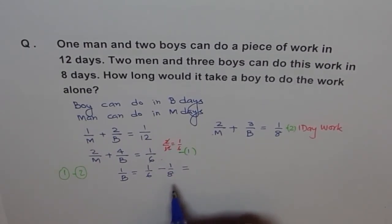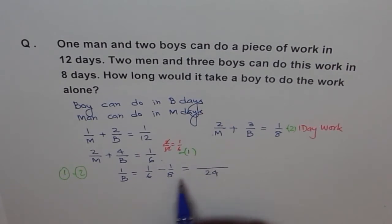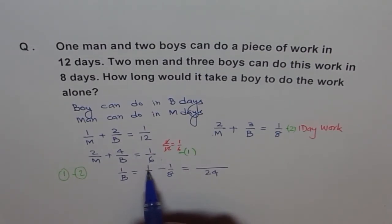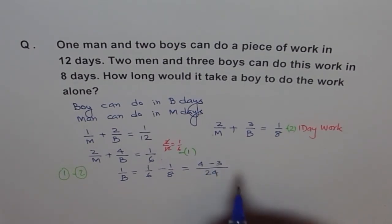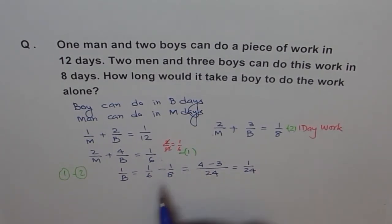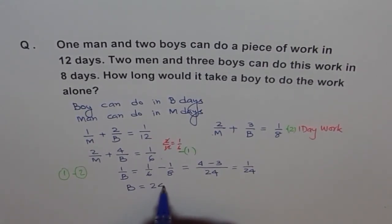Now we can solve this, 1 over 6 over 1 over 8. What is the common factor here? 24. 24 goes 4 times with 6 and 3 times with 8. Therefore, here it will be, to get 24, I have to multiply both by 4. So I get 4 here. To get 24, I have to multiply 8 by 3 and therefore 1 by 3, so minus 3. So it is equals to 1 over 24. Now, do you get the answer? How much time does a boy take to complete the work? 24 days. So when you flip it, you get B equals to 24.